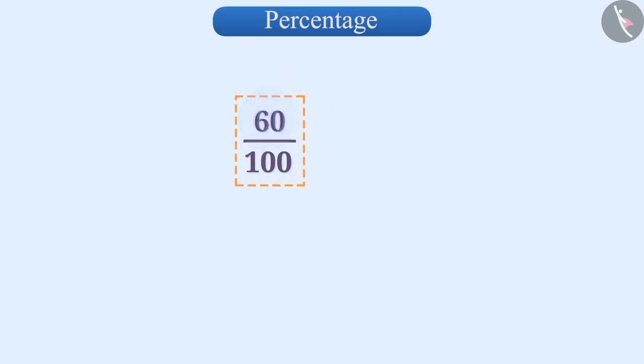Here, 60 is the numerator of a fraction whose denominator is 100. The numerator of a fraction whose denominator is 100 is called percent. We write it this way, and we read it as 60%.